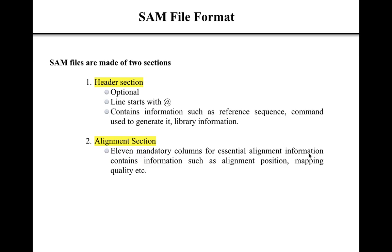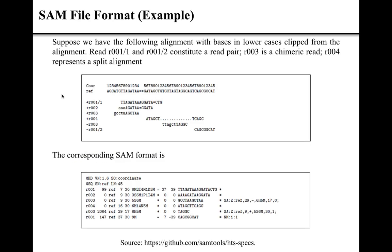This slide represents an example SAM file. The box here is a graphical representation of reads aligned to the reference sequence, just like the one we discussed earlier. When the information in this graphical representation is converted into SAM file format, it translates into something like this — we can see the header section where lines start with the '@' character, and the alignment section containing the 11 mandatory columns.